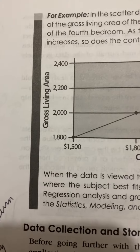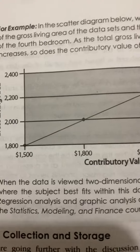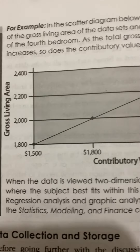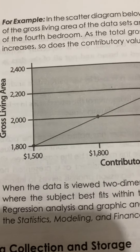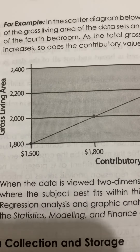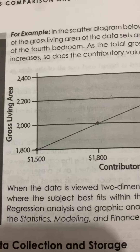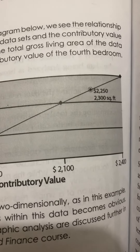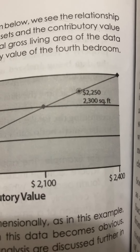Here's your gross living area — 1,800 square feet up to 2,400 square feet. Along the length you have the contributory value. At your beginning point you have $1,500 for 1,800 square feet. You go down the line: $1,800 for 2,000 square feet, $2,100 for 2,200 square feet, and $2,250 for 2,300 square feet.